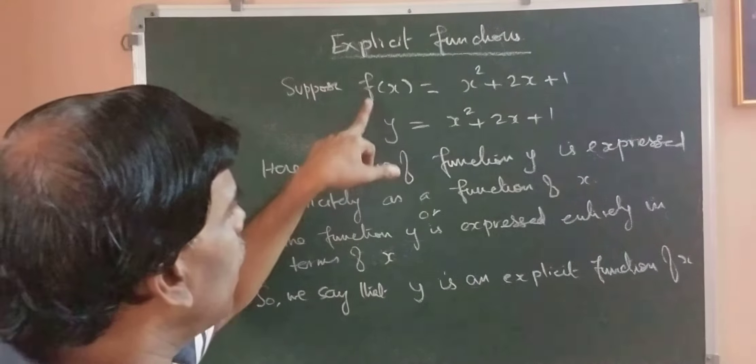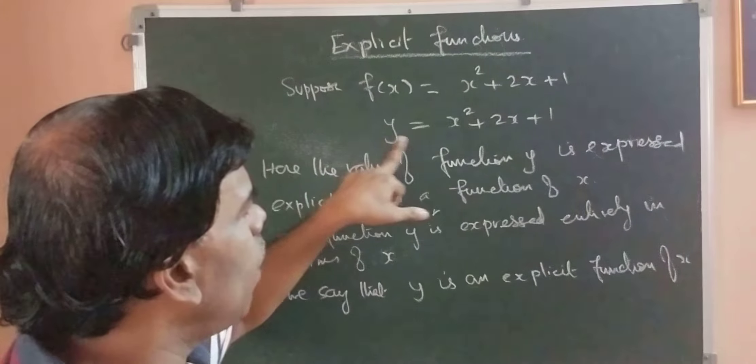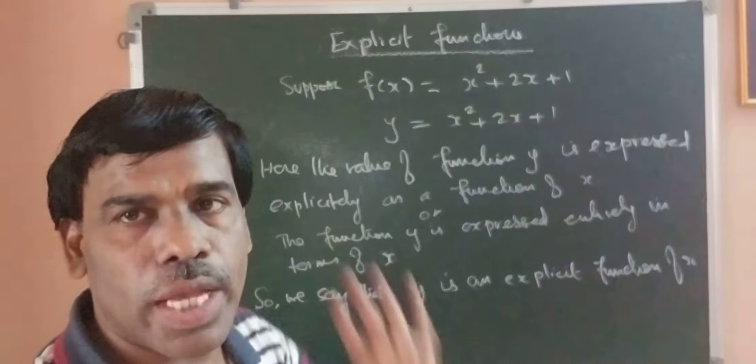That means I am writing, instead of f of x, the function I am writing as y. y equal to x square plus 2x plus 1.